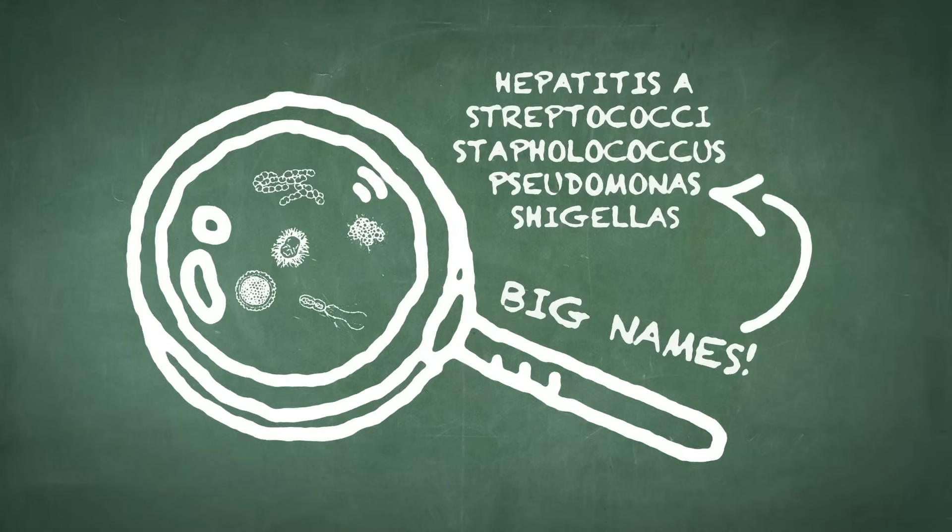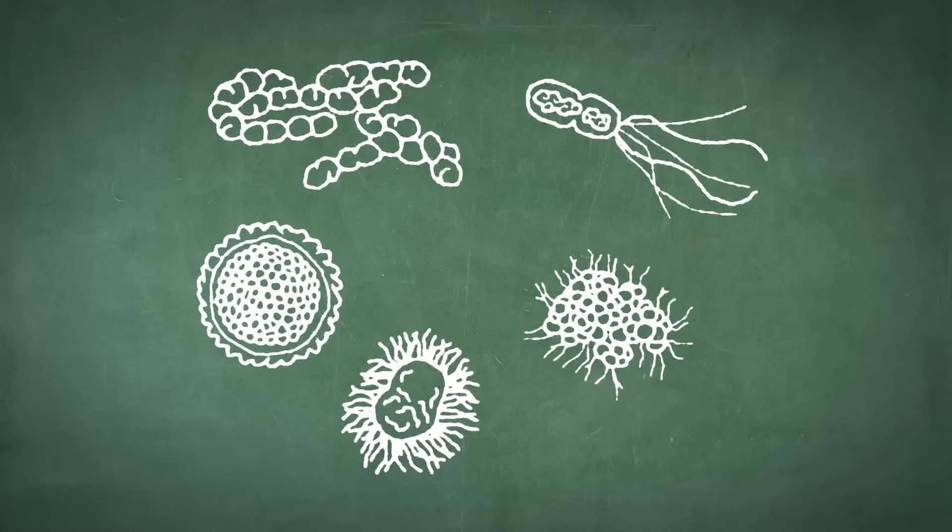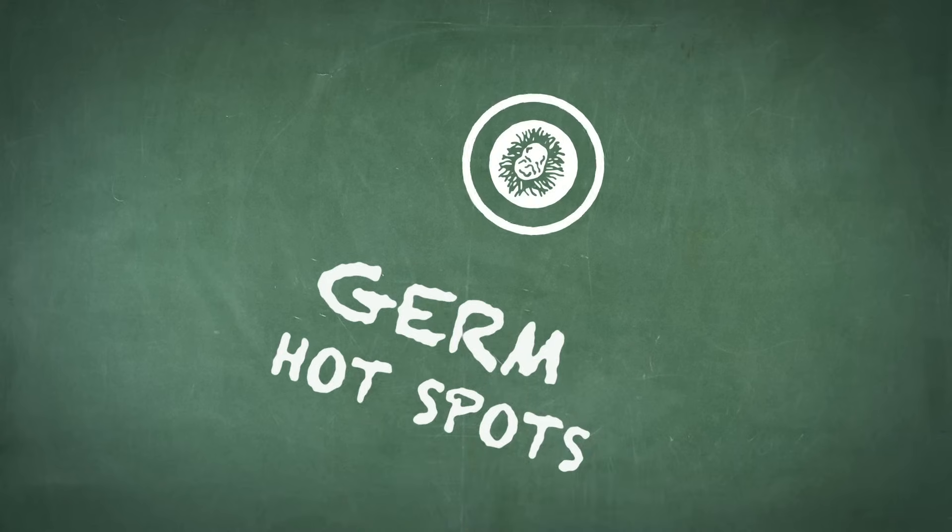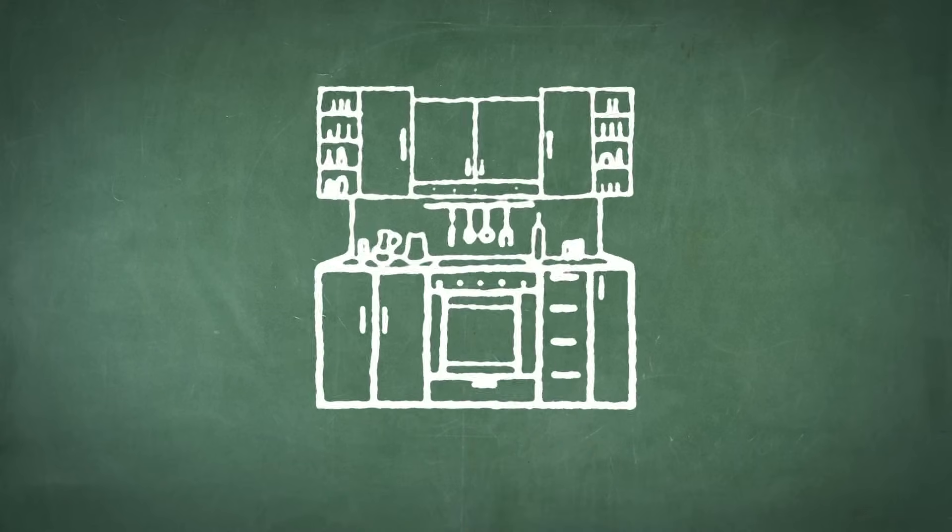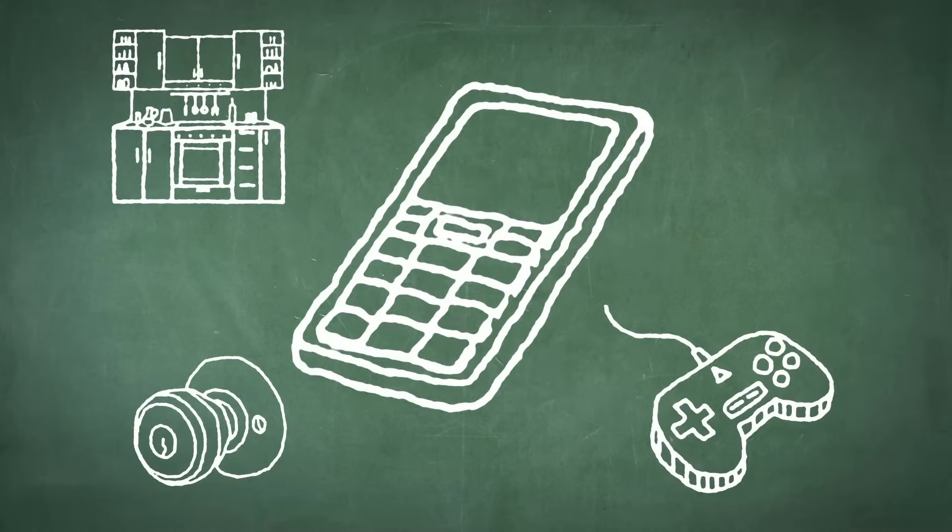Here are a few common nasty ones. Scary-looking, I know. These germs have favorite places to hide and live too. We call these areas germ hot spots, like kitchen countertops, doorknobs, and even your gaming devices and cell phone. And they love to live in your bathroom.